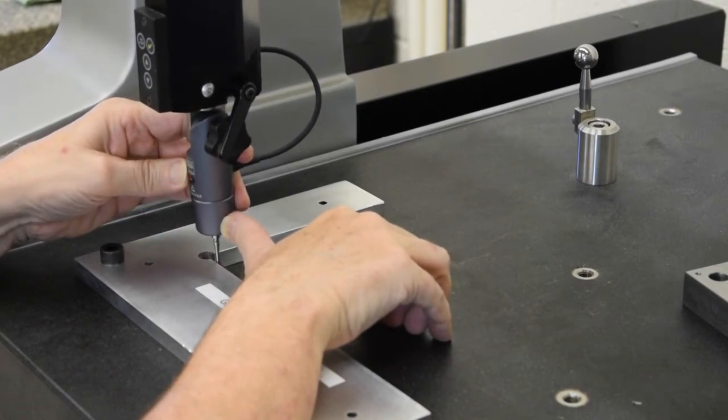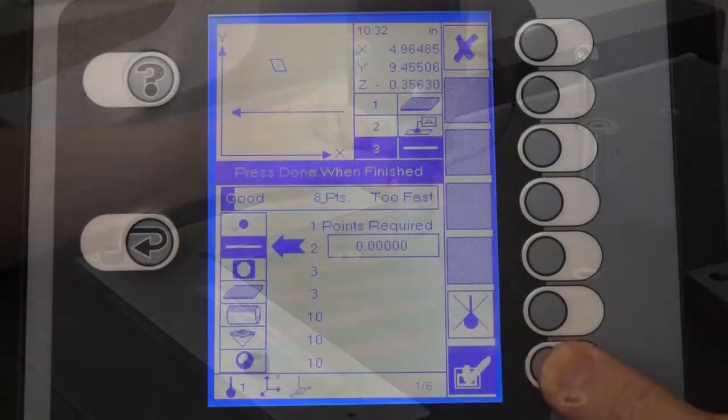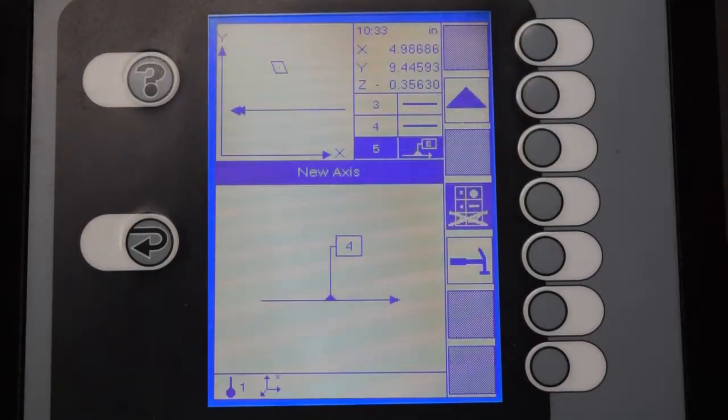So when we're done, we'll come over to the screen, select the measurement, and then go up and press the B datum button.